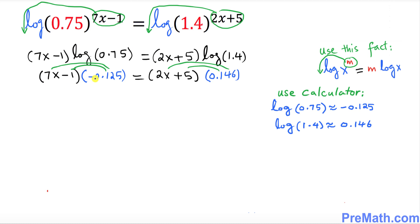When you multiply 7x times this number that's gonna give you negative 0.875x. Negative and negative become positive 0.125 and on the right hand side is gonna be simply 0.292x plus 0.73.